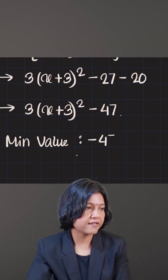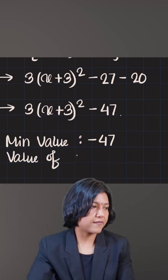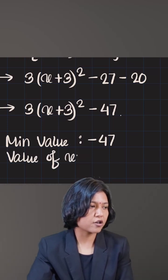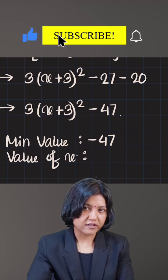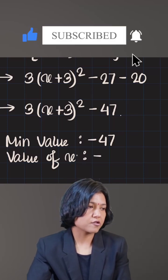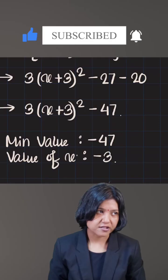So minimum value is minus 47 and the value of x where this minimum occurs is found out by taking the negative or the opposite of what you see in the bracket. So x plus 3, what is the zero of this? x plus 3 will be made zero at x equals to minus 3. So the value of x where this minimum occurs is minus 3.